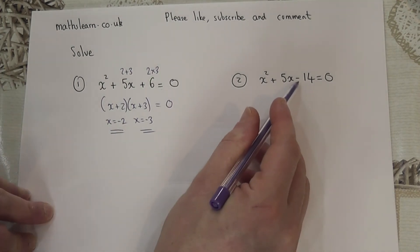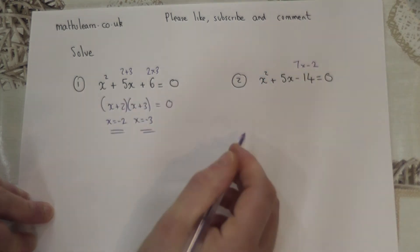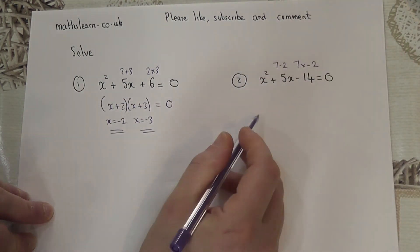The second one has -14. Now, 7 times -2 is -14, and 7 take away 2 is 5.